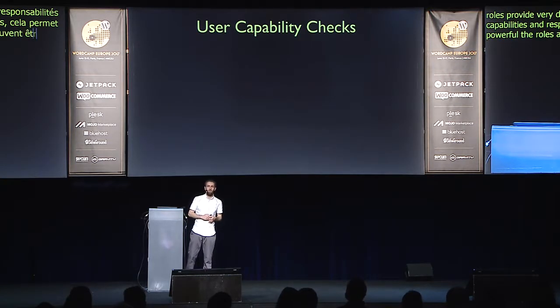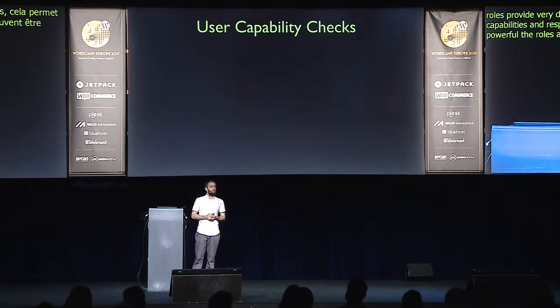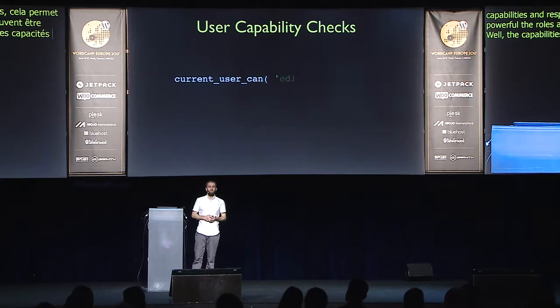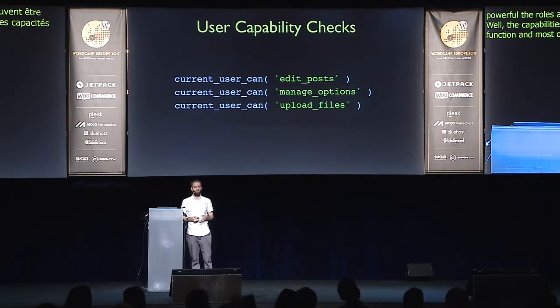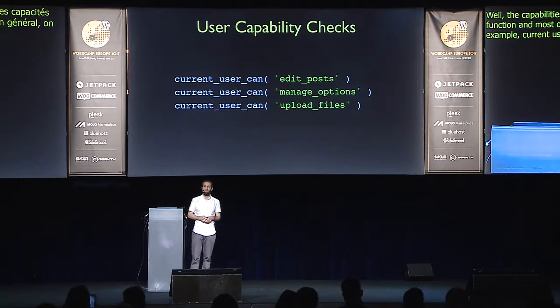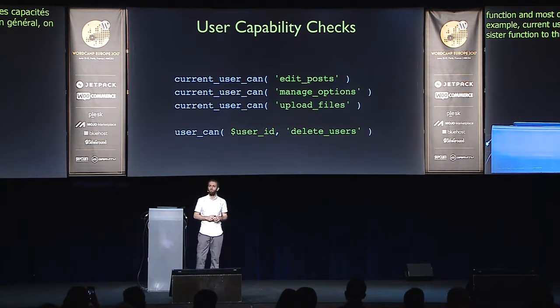Capabilities determine whether or not a user can perform a given function. Most of the time we use it with the currentUserCan function — for example, currentUserCan edit_posts, manage_options, upload_files. There's a sister function called userCan that takes a user ID, so if you need to check the capabilities of a user who isn't the current logged-in user, you can pass their user ID to that function.